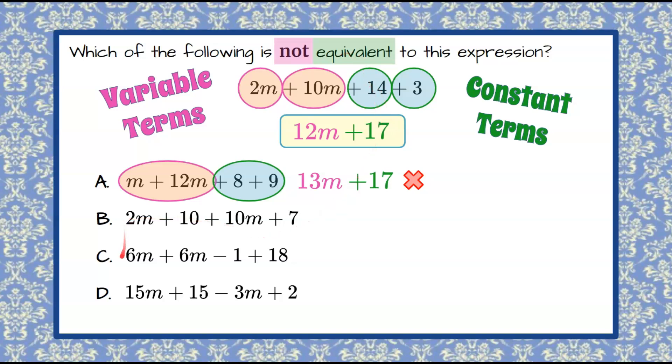But let's review B, C, and D just to make sure. So our like variable terms here are 2m and 10m, which is 12m. Our like constant terms are 10 plus 7, which is 17. So this is equivalent. It checks out.